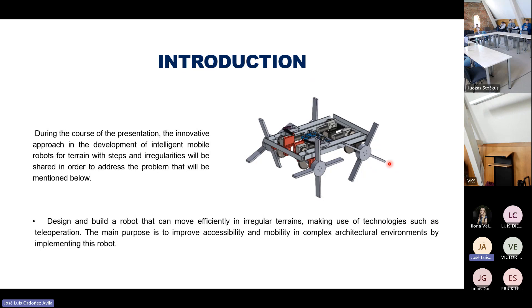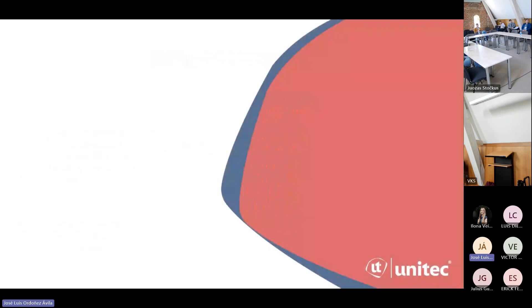The design that we are going to present here is taking the task of mobile robots that use legs. These are very interesting robots that can be used for more complex tasks like going upstairs or working in irregular terrains. The main purpose is to improve accessibility and mobility in complex architectural environments by implementing this robot. This is a very low-cost robot.